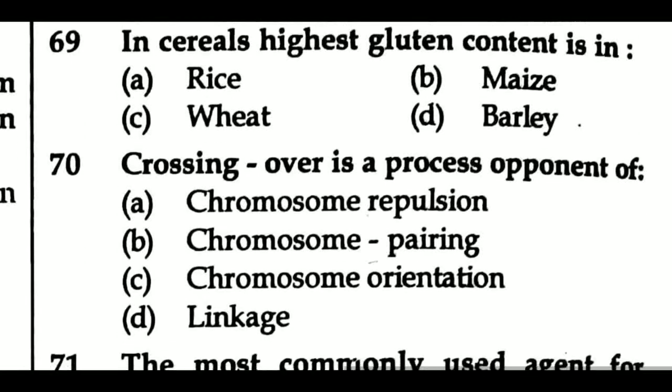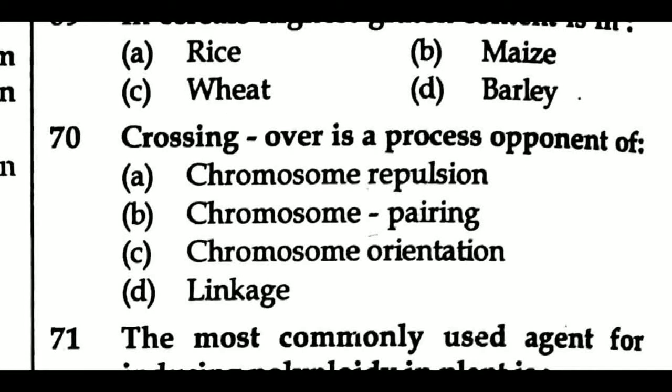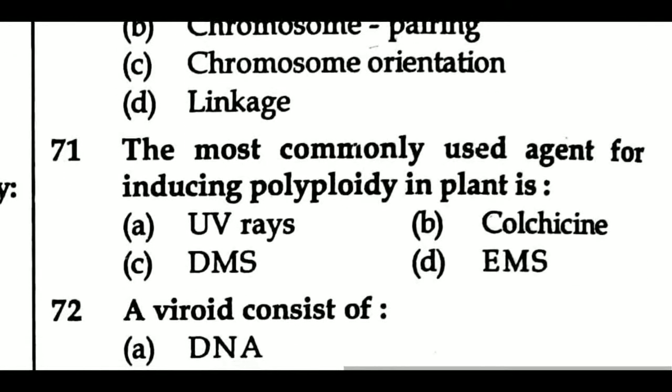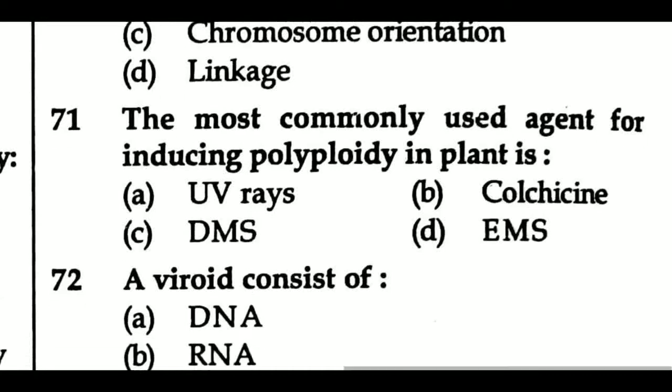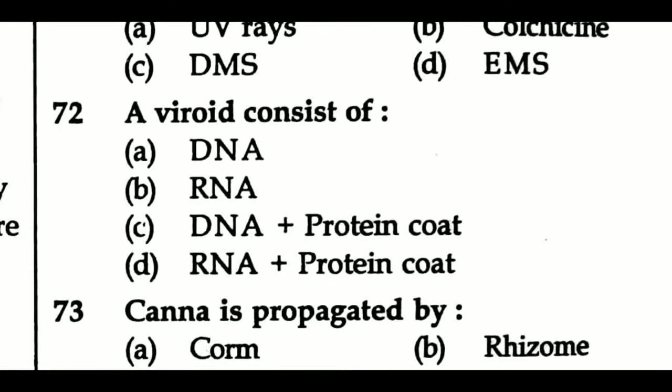Question 70: Crossing over is a process component of — Option A: chromosome repulsion, Option B: chromosome pairing, Option C: chromosome orientation, Option D: linkage. Question 71: The most commonly used agent for inducing polyploidy in plants is — Option A: UV rays, Option B: colchicine, Option C: DMS, Option D: EMS. Question 72: A bacteriophage consists of — Option A: DNA, Option B: RNA, Option C: DNA plus protein coat, Option D: RNA plus protein coat.